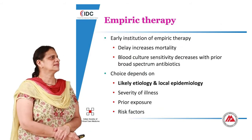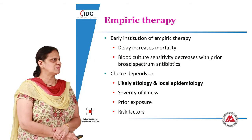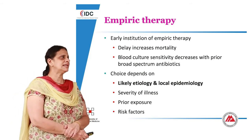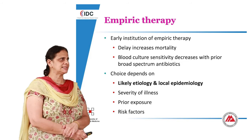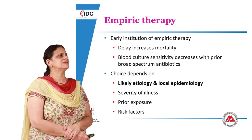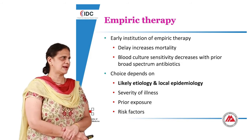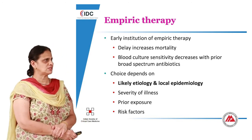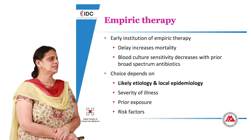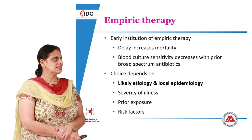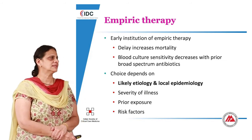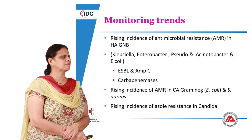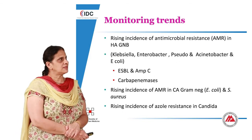To reiterate, empiric therapy requires early institution — we know in sepsis that delay increases mortality and blood culture sensitivity decreases with prior broad-spectrum antibiotics. The choice of therapy depends on the likely etiology, local epidemiology, severity of illness, prior antibiotic exposure, and co-morbidities or risk factors.